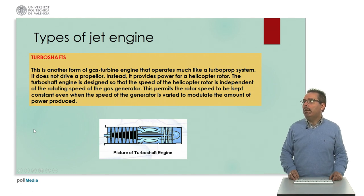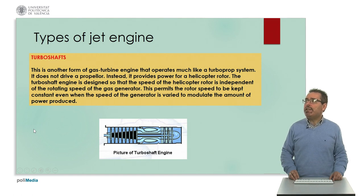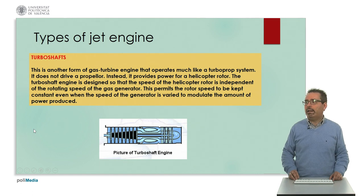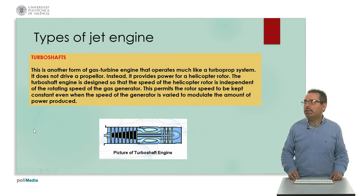For example, it permits the rotor speed to be kept constant even when the speed of the generator is varied to modulate the amount of power produced — as in helicopters and other similar types of aircraft. Here we have a picture of a turboshaft engine.